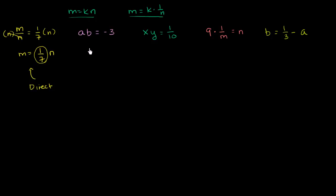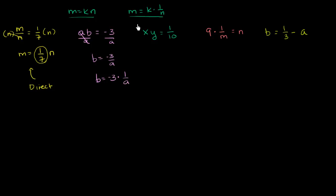ab is equal to negative 3. If we want to separate them, let's divide both sides by a. We get b is equal to negative 3 over a, or we could write this as b equals negative 3 times 1 over a. One variable is equal to a constant times 1 over the other variable — in this case our constant is negative 3. So here they vary inversely. This is an inverse relationship.